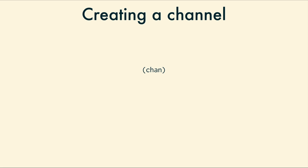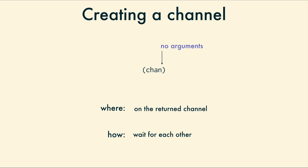We can create a channel using the function `chan`. It does not need any arguments, but there are optional arguments — we'll get to that later. When called with no arguments, `chan` makes and returns a new place to exchange data, with the agreement that they will wait if the data isn't ready yet. Where will they exchange? On the channel between them. How will they exchange? They wait for each other. That's all encoded in the channel.